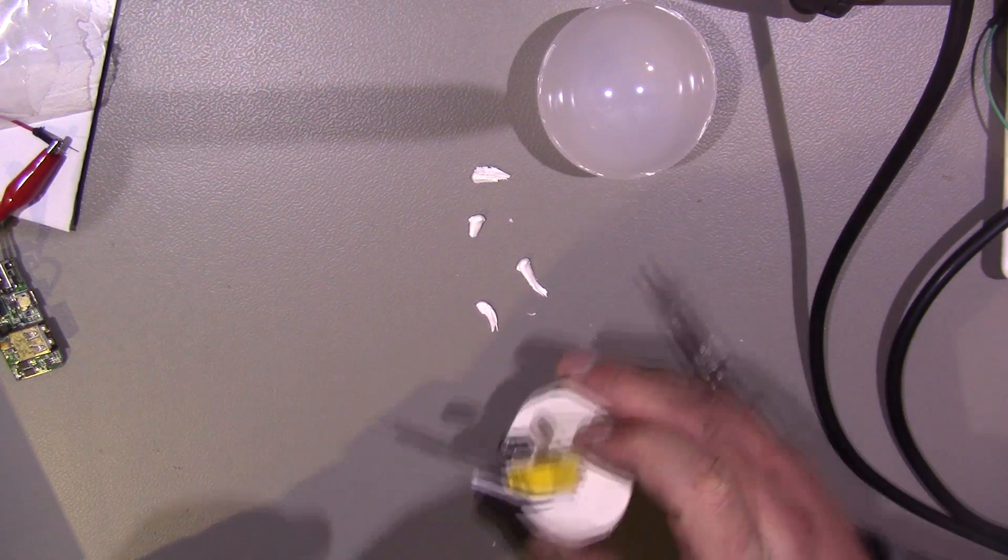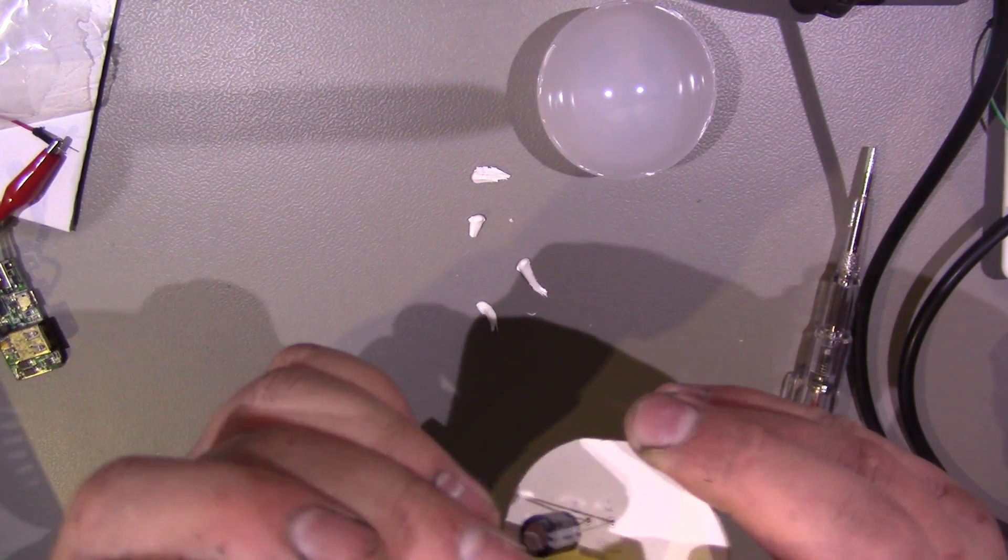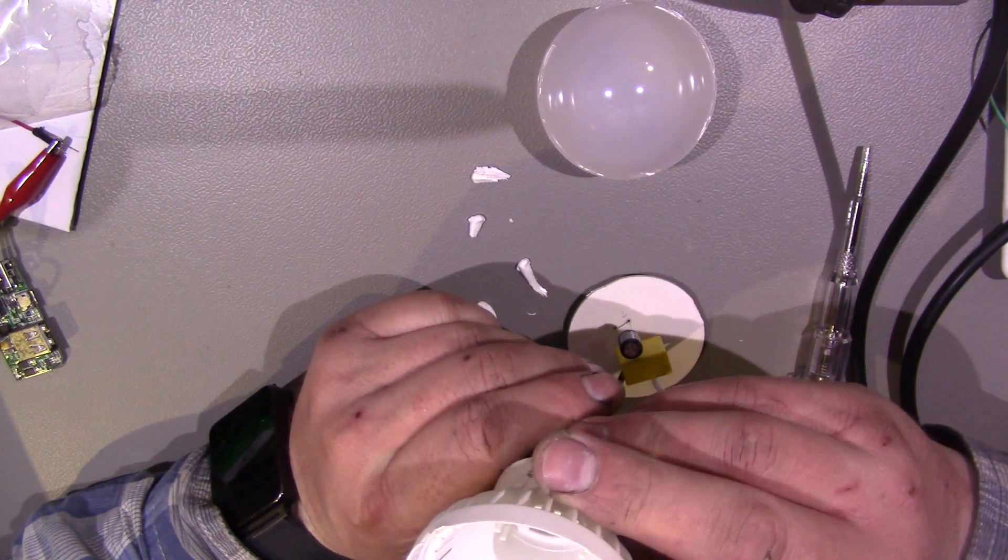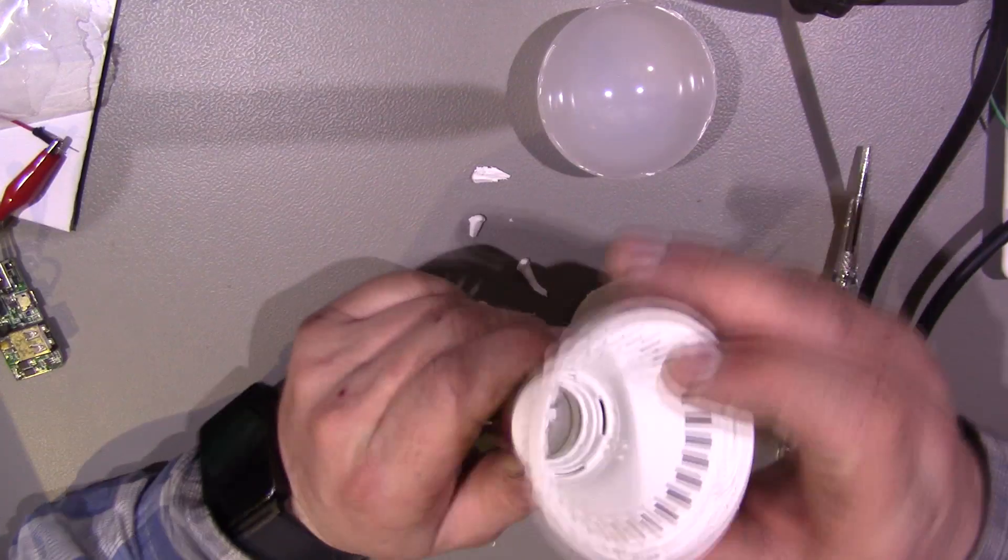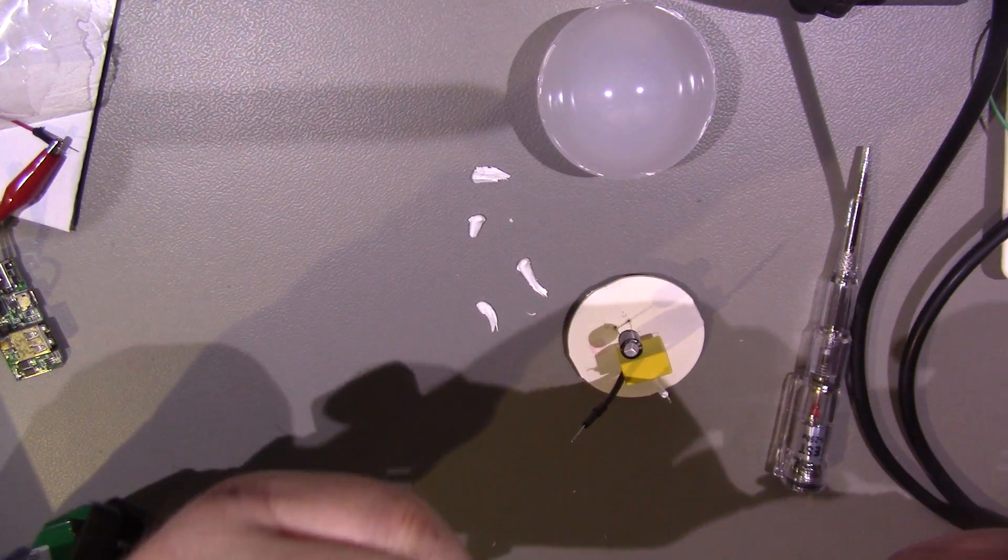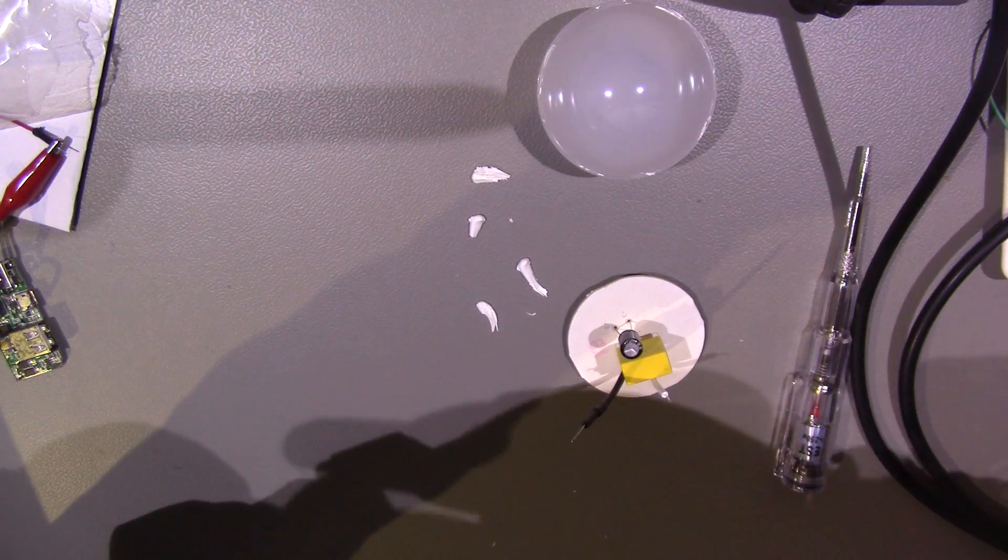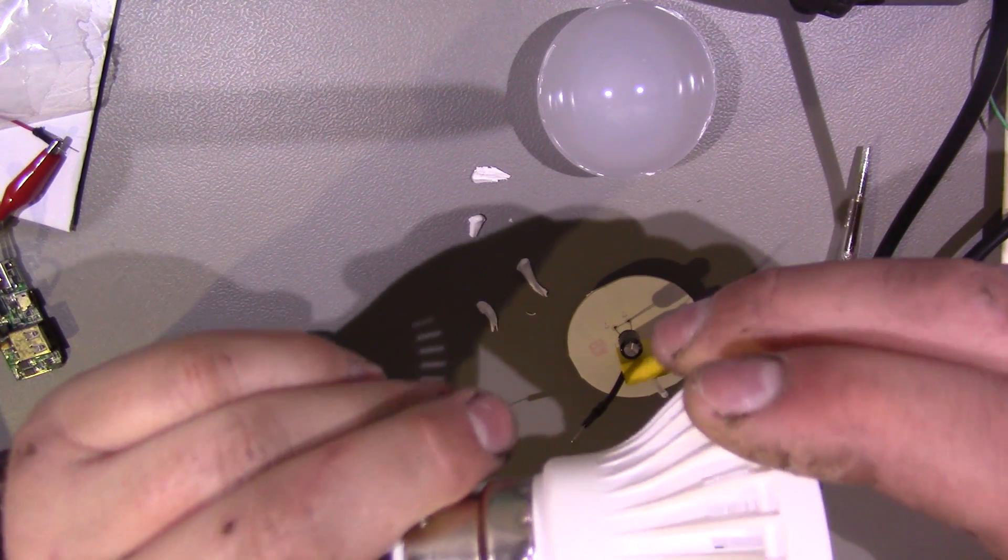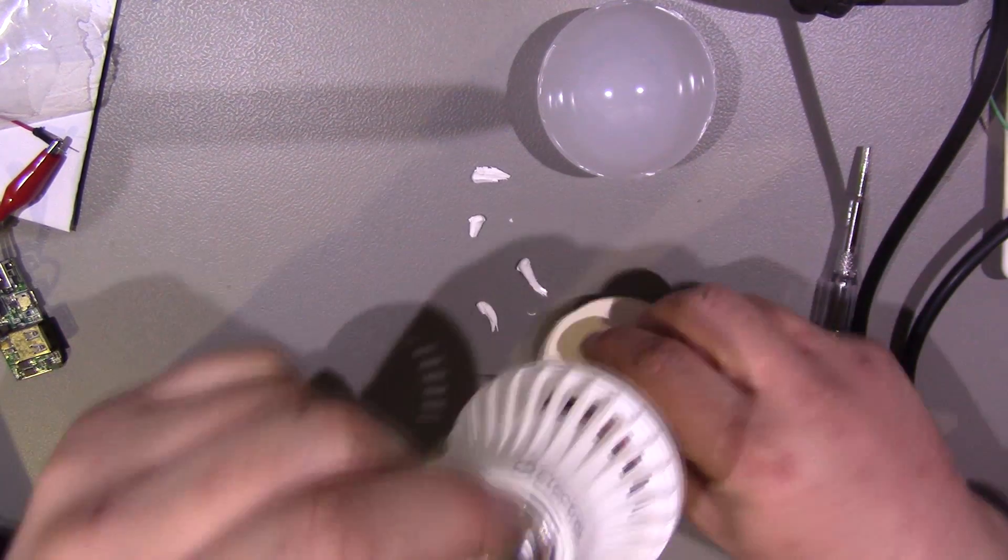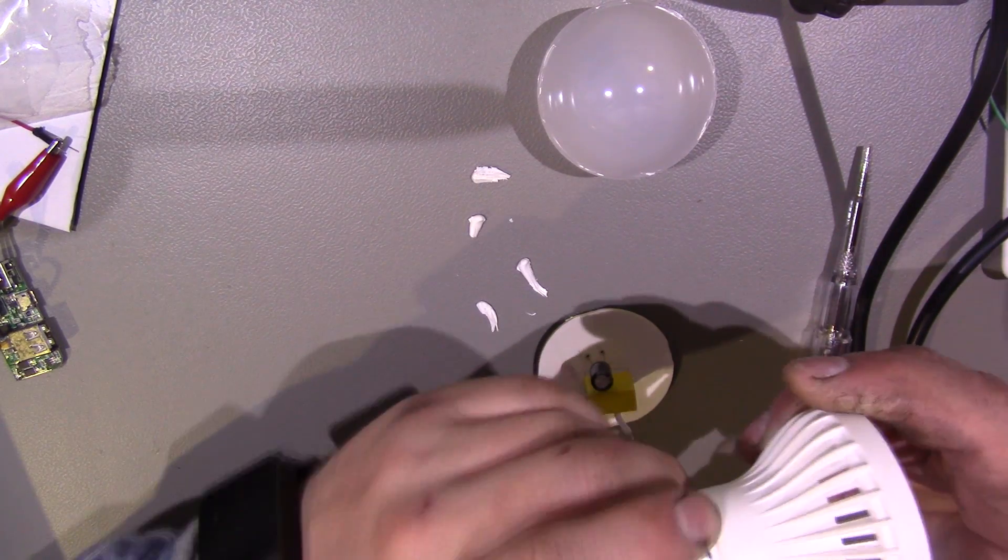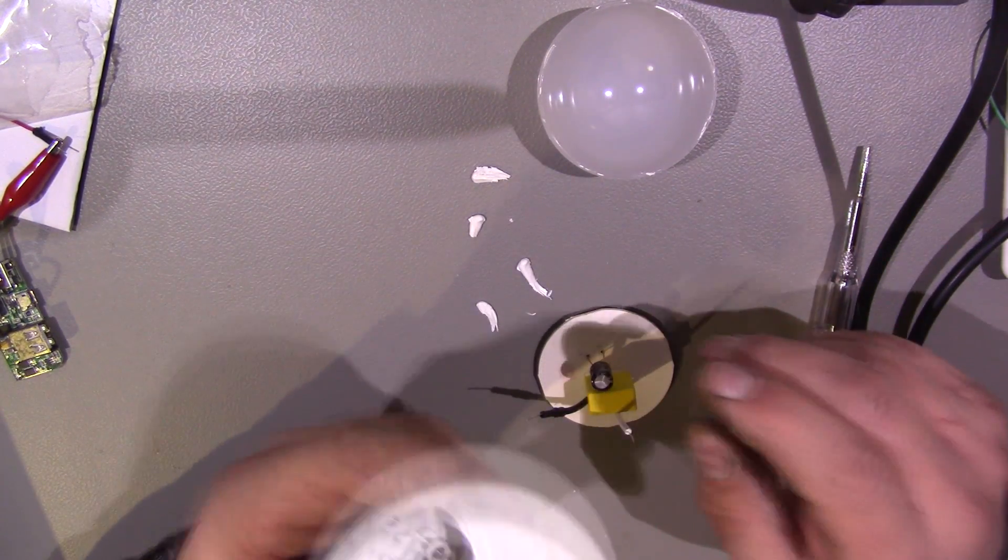Alright so this has got these wires here for the power coming in. They seem to be in some kind of push on connectors. I expect that what they do is, it looks like it's been pressed in. I think they put the connector on it and then these get crimped around the outside to hold it onto the plastic casing.